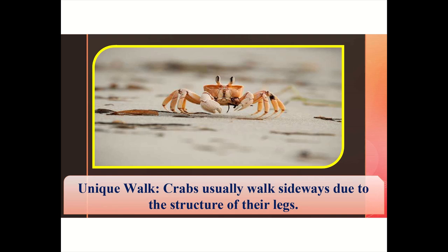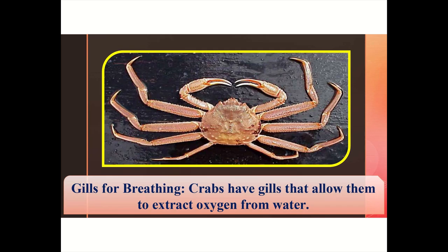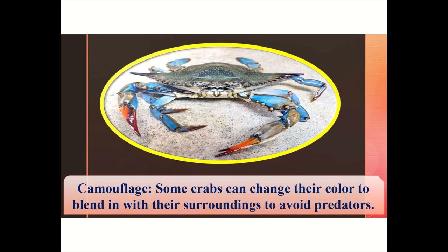Unique walk: crabs usually walk sideways due to the structure of their legs. Gills for breathing: crabs have gills that allow them to extract oxygen from water. Camouflage: some crabs can change their color to blend in with their surroundings to avoid predators.